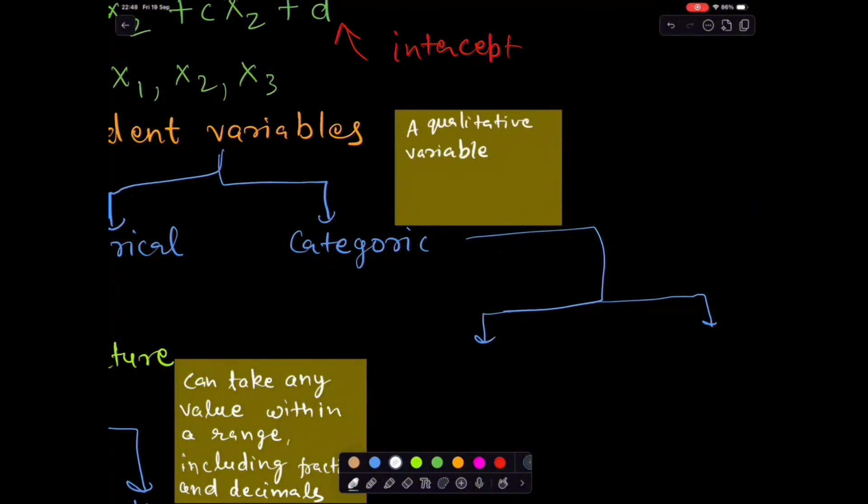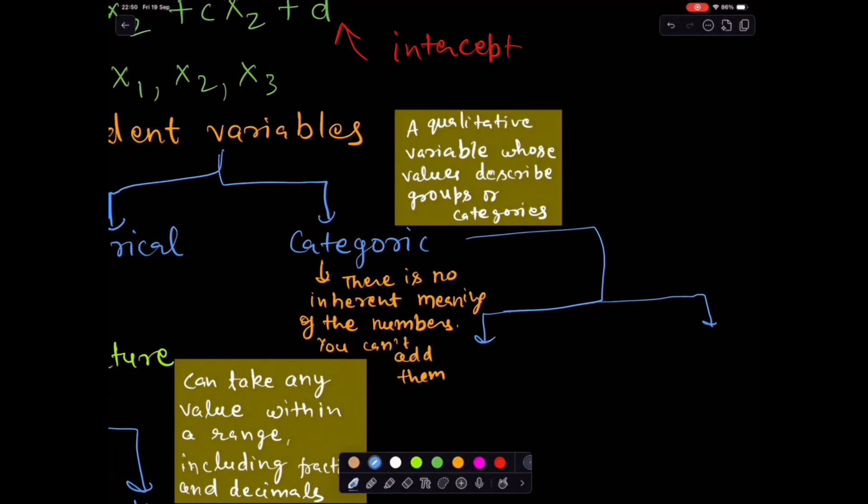Now let's talk about categorical variables. These are qualitative. They describe groups or categories like gender, country, or payment type. They don't have inherent numerical meaning. You can't add or subtract them.